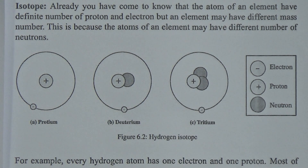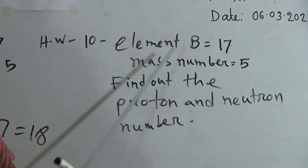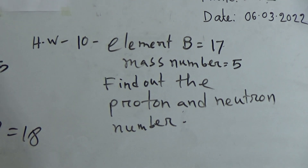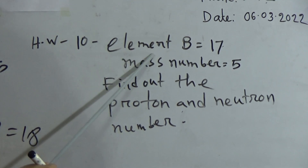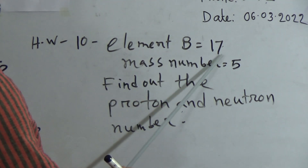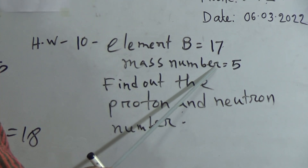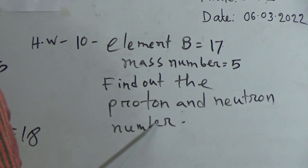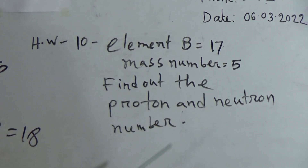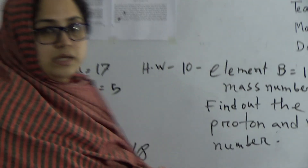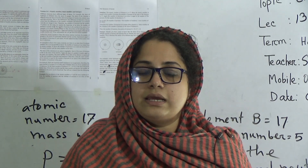I hope all of you have understood our today's topic. Here is given your SW number 10, a mathematical problem. For element B, the atomic number is seven and the mass number is 15. Find out the proton number and neutron number of that element. This is your SW. See you again in the next class. Allah Hafiz.